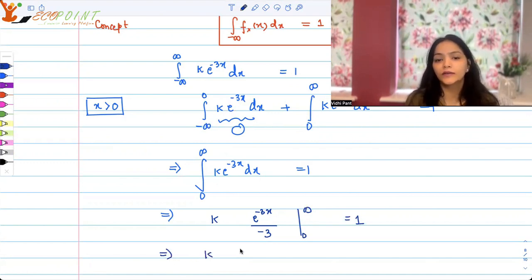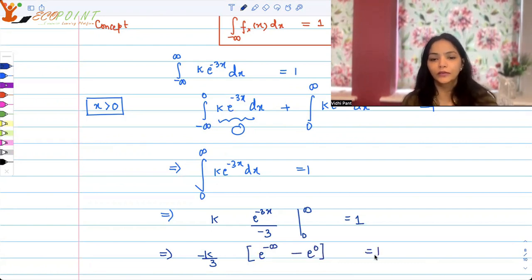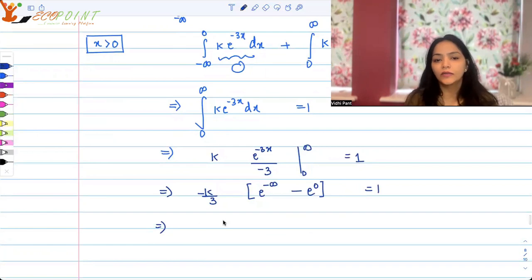So k is here and I can put -1/3 also outside. What I get is e^(-∞) - e^0 equals 1. This means we have -k/3. e^(-∞) is 0, and minus 1, e^0 is -1. So 0 - 1 equals 1.